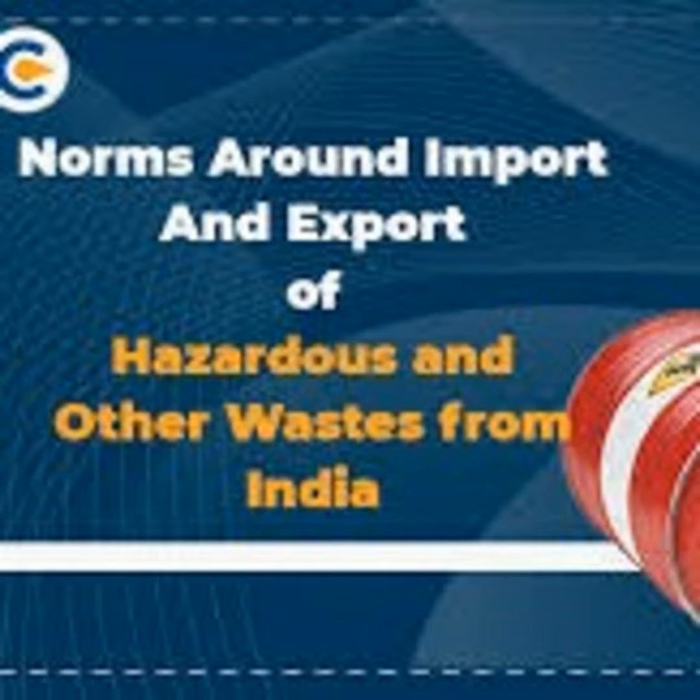Clause 5: The port and customs authorities shall ensure that the shipment is accompanied by the movement documents in Form 9 and a test report of analysis of the hazardous waste consignment from a laboratory accredited by the exporting country for an inspection and certification agency approved by the Director General of Foreign Trade. For import of metal scrap, paper waste and other waste covered under Basel numbers B1010, B1040, B1050, B1100, B1230, and B3020 as specified in Part D of Schedule 3, the shipment shall be accompanied by movement documents in Form 9 and a pre-shipment inspection certificate issued by the inspection agency certified by the exporting country.